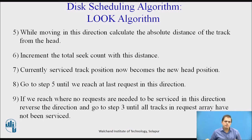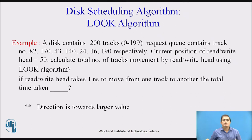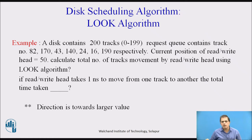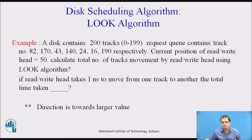Now let us see these steps with an example. A disk contains 200 tracks (0 to 199). The request queue contains track numbers 82, 170, 43, 140, 24, 16, and 190. The current position of the read/write head is 50. We need to calculate the total number of track movements using the LOOK algorithm. We also calculate total time if the head takes one nanosecond to move from one track to another. We assume the initial direction is towards larger values.